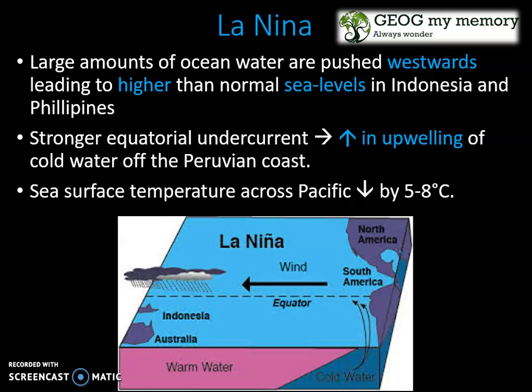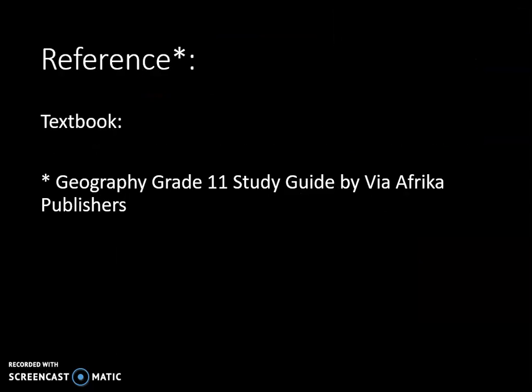The sea surface temperature across the Pacific decreases by five to eight degrees Celsius. I hope this helped you. The reference I used is the Geography Grade 11 Study Guide by Via Africa Publishers.